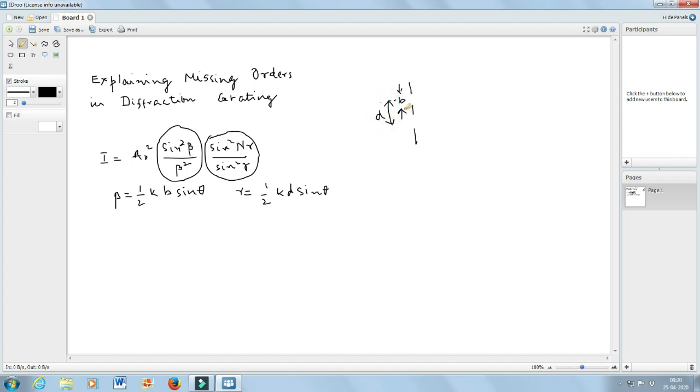As I have explained to you, the location of the principal maxima can be obtained by the second part. This second part, the maxima occurs when you have gamma is equal to mpi.